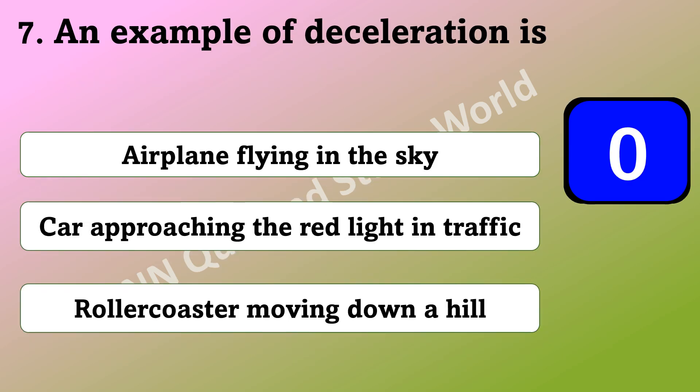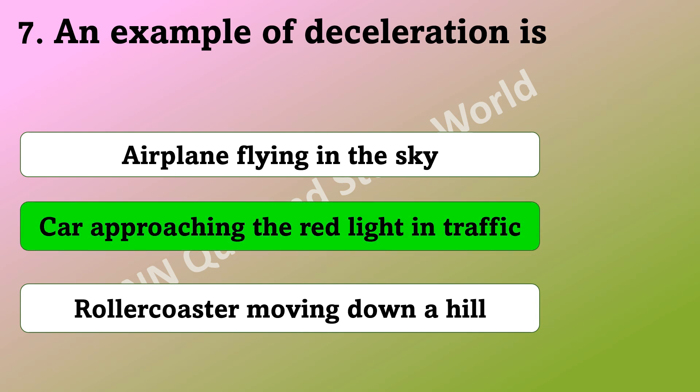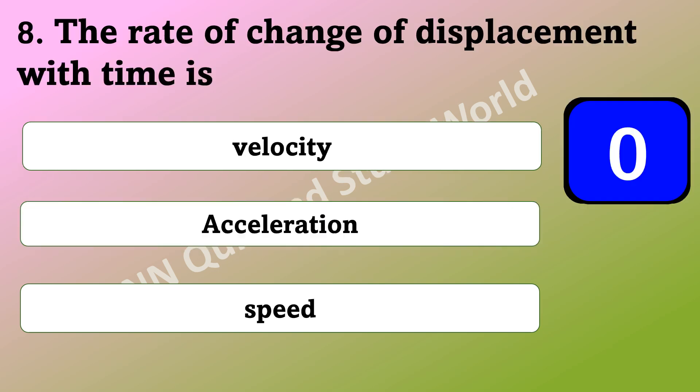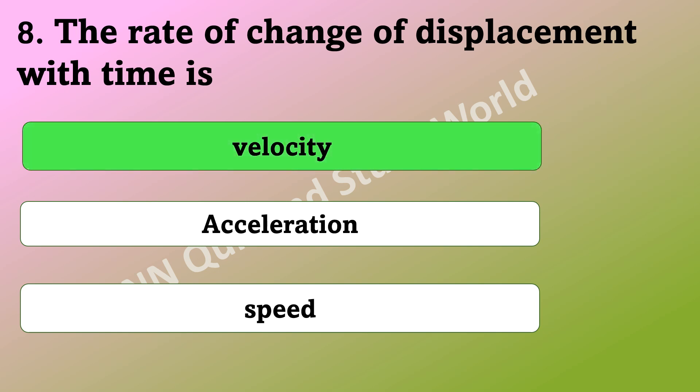What is an example of deceleration? Is it an airplane flying in the sky, a car approaching the red light in traffic, or a roller coaster moving down a hill? What is the rate of change of displacement with time called? Is it velocity, acceleration, or speed? The answer is velocity.